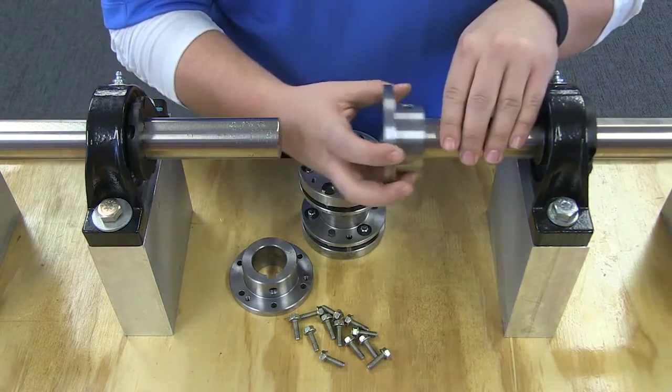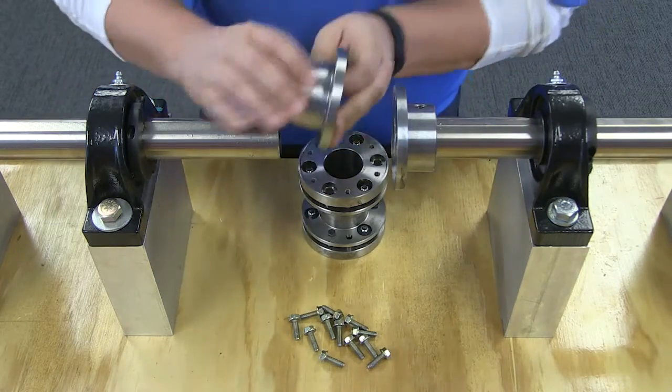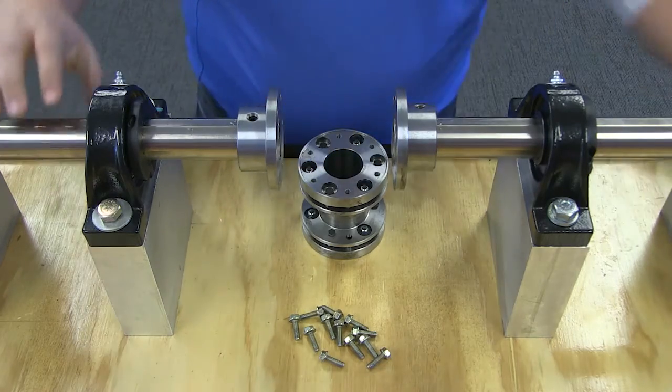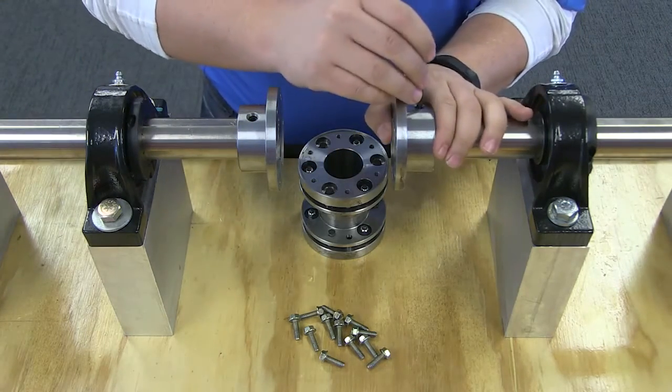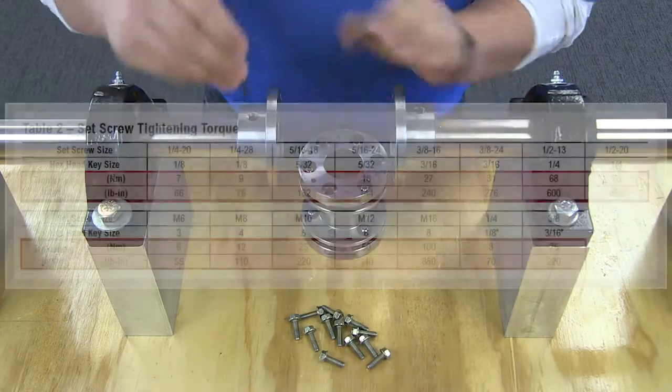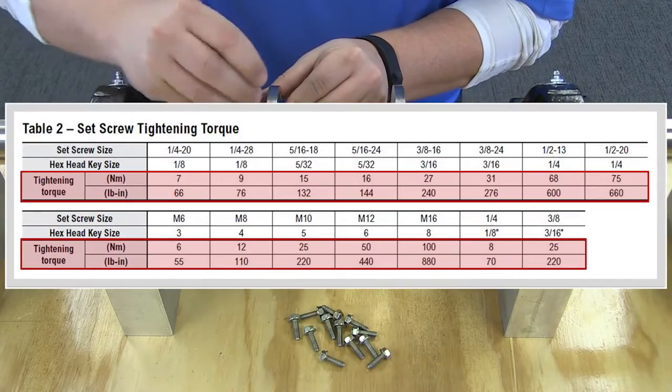To begin, mount both hubs on the shafts. For clearance fit, be sure that the set screws in the hub do not protrude into the keyway or the bore. Slide the hub up the shaft to the desired axial position. Tighten set screws to the value shown in this table.